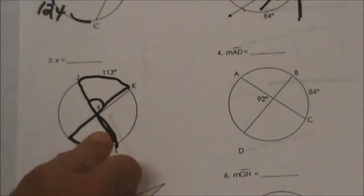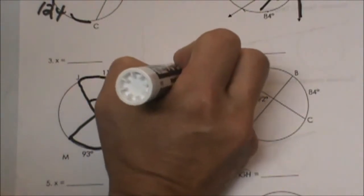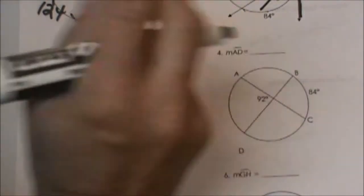Since it is inside the circle we are going to add the arcs. 113 plus 93. Then divide by 2.